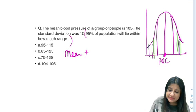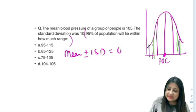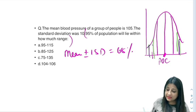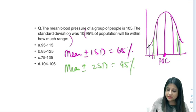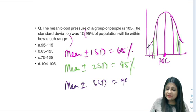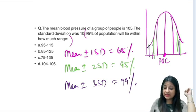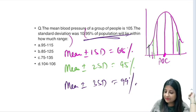Mean plus minus 1 SD covers 68% observation. Then you have a green color line: mean plus minus 2 SD covers 95% observation. And mean plus minus 3 SD covers 99%. So here you're asked 95%, so you have to use the second formula.